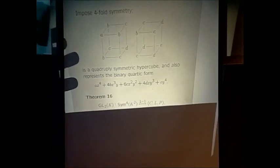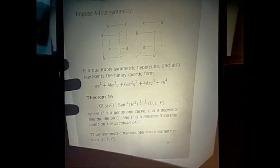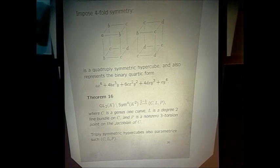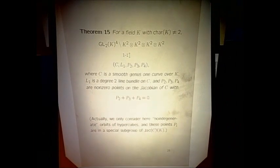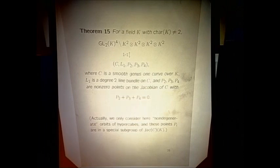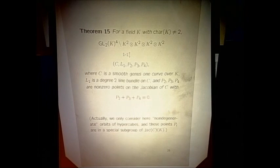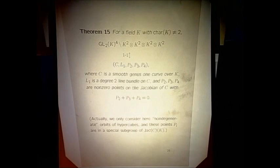The totally symmetric case corresponds to: binary quartic forms of 1-4-6-4-1 type, modulo the action of GL2, correspond to a genus one curve, a degree two line bundle. In this case P2, P3, P4 all turn out to be the same, and they sum to zero, so the point on the Jacobian has to be three-torsion. Therefore binary quartic forms parametrize: a genus one curve, a degree two line bundle, and a three-torsion point on the Jacobian.